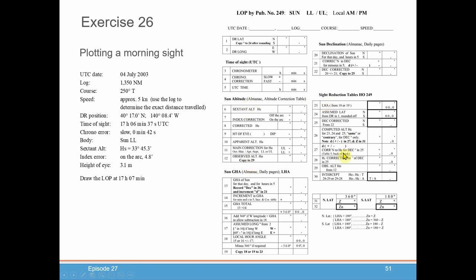When you get down to the very bottom, you're going to have an intercept. You're going to have latitudes and longitudes — your assumed latitude and your assumed longitude. From that, you should be able to do a plot of your intercept with your ZN and be able to draw a line of position. So you're going to do that for a morning sight, which should be fairly straightforward based on our previous lessons.